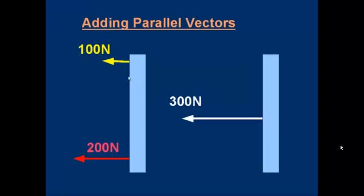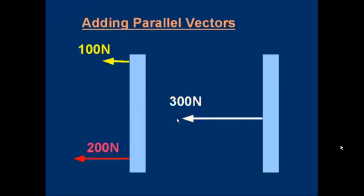Another way to look at this is to draw the vectors end to end. It doesn't matter which we start with. If we have the yellow vector here and the red vector here, with the tail of the yellow one in contact with the tip of the red one, the resultant is the vector from the unconnected tail to the unconnected tip. I'm showing you this technique because we're going to be using it later. In part two, when we add vectors of different directions, we'll draw the vectors with one tail touching the other's tip, and that allows us to work out the resultant.